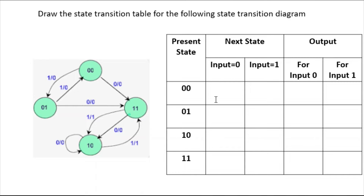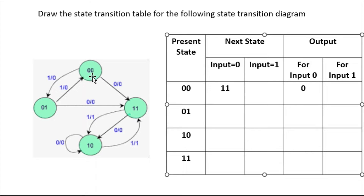Now let's start with any one of the values — I'm starting with state 0 0. So 0 0 is going to state 1 1 when input is 0 and output is 0. And 0 0 is going to state 0 1 when input is 1, and you can see the output is 0.